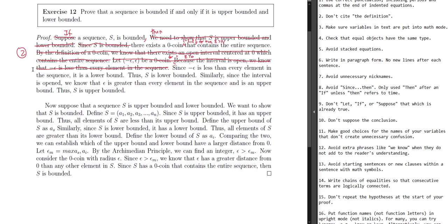Similarly, epsilon is greater than every element in the sequence and is thus an upper bound. Hence, S is upper bounded. Also, avoid extra phrases like 'we know that' — that's number 12 on the list. And don't use 'thus' twice in a row — use 'hence' for the second one. I think we can take this first direction and really shrink it down.